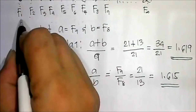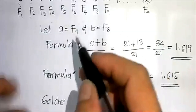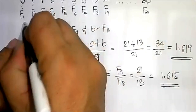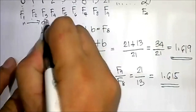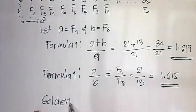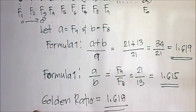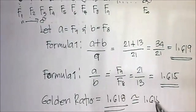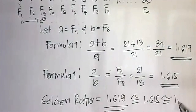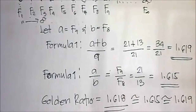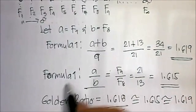As the subscript n approaches infinity, the ratio will become approximately equal to 1.618. So both results — approximately 1.615 and approximately 1.619 — confirm that we can use either Formula 1 or Formula 2.